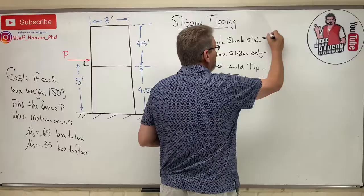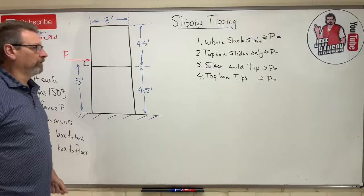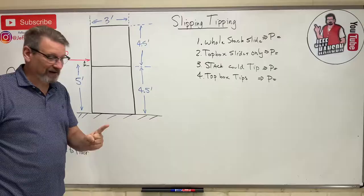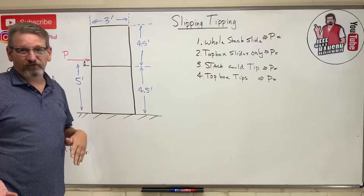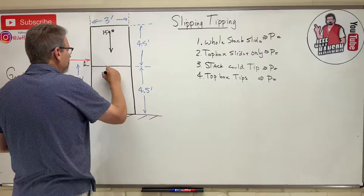The goal is to find P for each one of these scenarios. We've got four different numbers. Which one do we select for the force P where motion occurs? The smallest one — because that's the one that's going to happen first. You'll never get to those other conditions. So let's put our weights on: 150 pounds and 150 pounds. Box-to-box coefficient of friction is 0.65, and box-to-floor is 0.35.